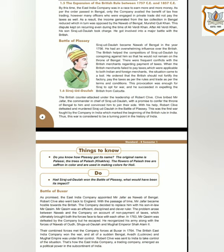The problem arose between the Nawab and the company on account of non-payment of taxes, which ultimately brought both forces face to face. In 1763, Mir Qasim was defeated by the company, but he escaped. He reorganized his army along with the forces of the Nawab of Awadh, Shuja ud-Daulah, and Mughal Emperor Shah Alam II. The combined forces met the company forces at Buxar in 1764. The British East India Company won the war, and all of a sudden, Bengal, Awadh, and the Mughal Empire came under their control.